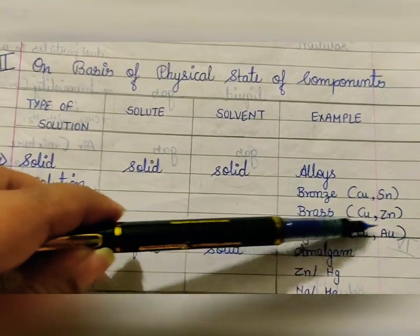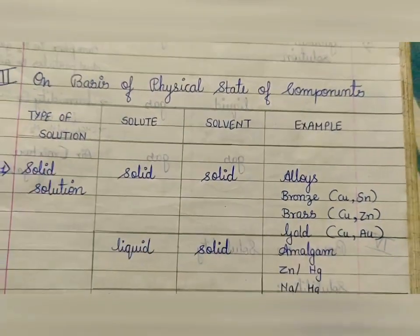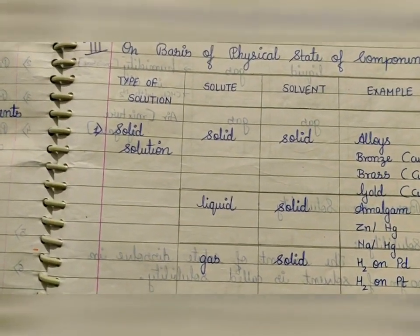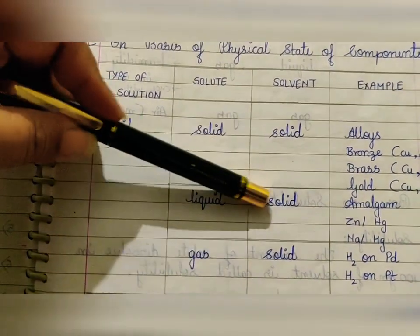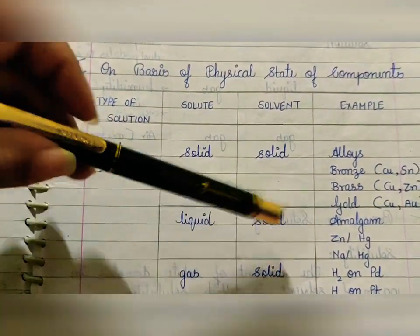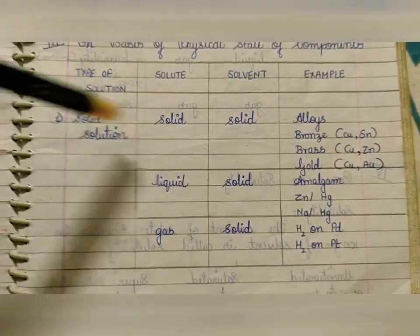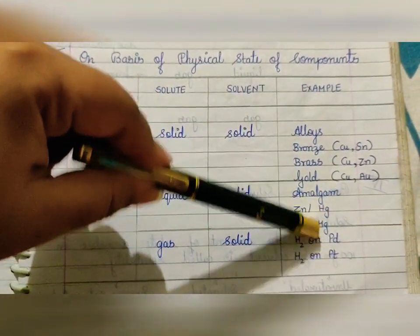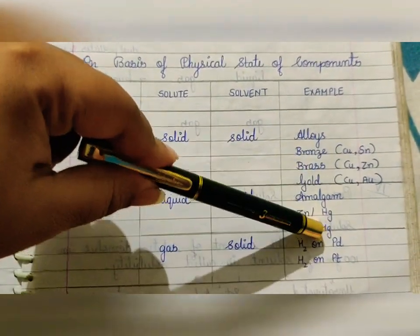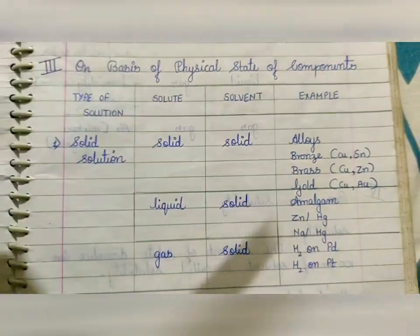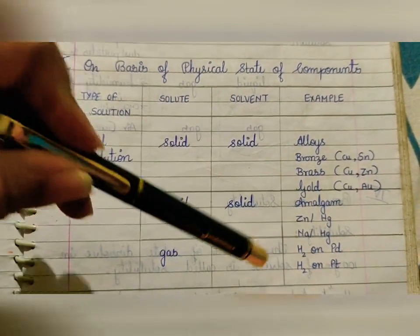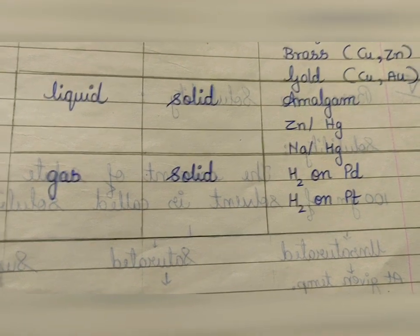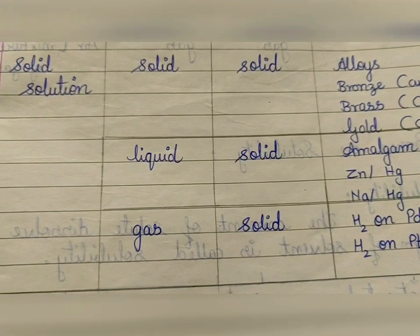Bronze is copper and tin; brass is copper and zinc; gold alloy is made up of copper and gold. Next, if solute is liquid and solvent is solid, you have a liquid-in-solid solution — but the physical state remains solid. Example: amalgam, where mercury is the solvent (e.g., zinc in mercury, sodium in mercury). Next, gas in solid: gas is adsorbed on the surface of solid — for example, hydrogen on palladium or hydrogen on platinum.